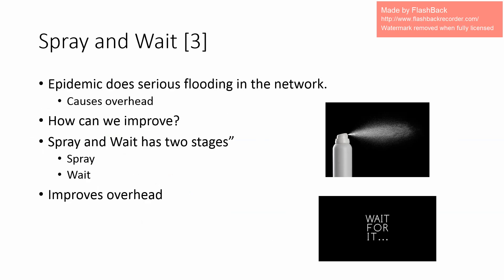Epidemic routing has some major problems. Based on its mechanism, it could cause serious flooding in the network, which causes overhead. One way to improve upon that is through Spray-and-Wait, another type of routing in DTN. It has two stages: the spray phase, which sends a number of copies of the message to a certain number of nodes in the area, and then a waiting period, which allows receiver nodes to notify the transmitter. Results show that overhead is significantly improved compared to epidemic routing.